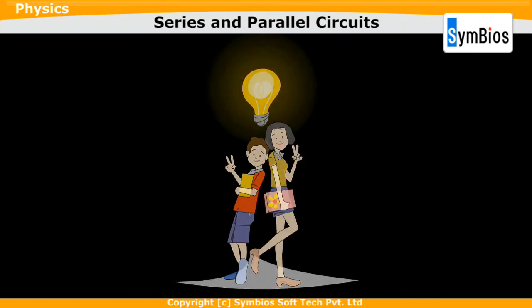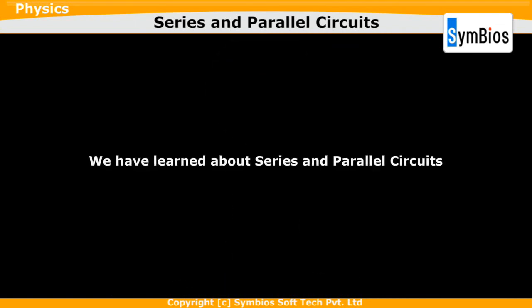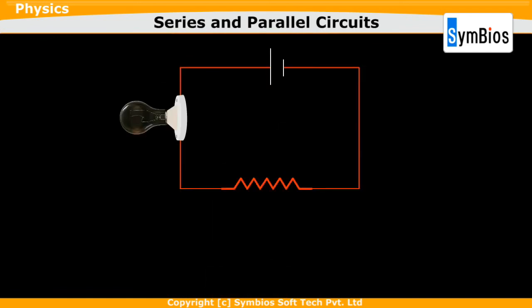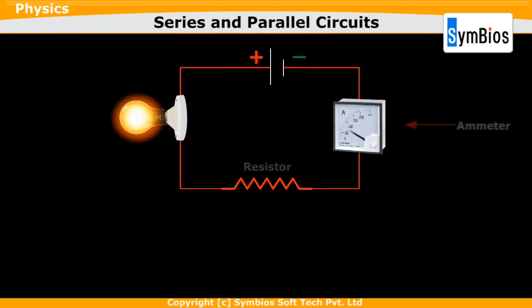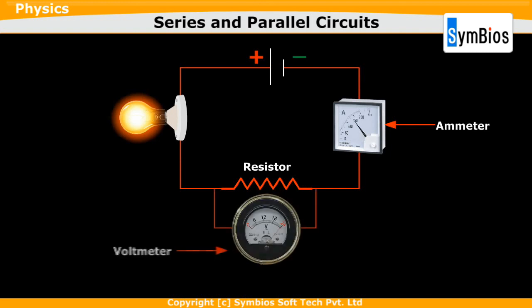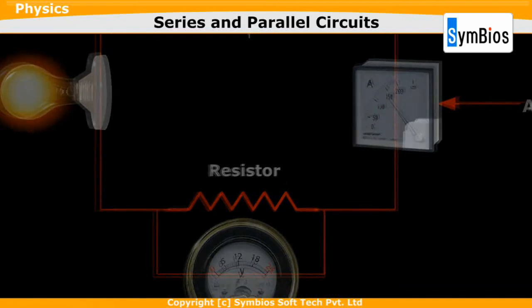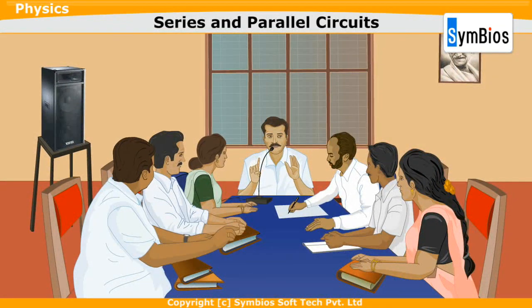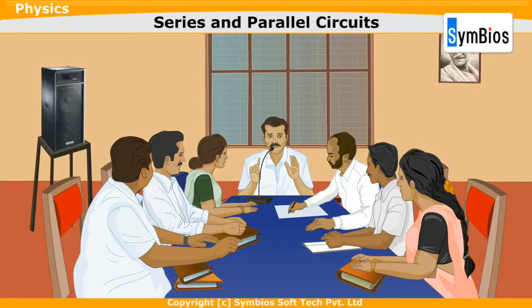In this lesson, we have learnt about series and parallel circuits. Now we have some questions for you to think about. Why is it that we always connect an ammeter in series and a voltmeter in parallel to a circuit? You must have seen speakers connected to a PA system for public meetings. Which is the best way to connect these speakers to the PA system — series or parallel? Find the answer yourself.